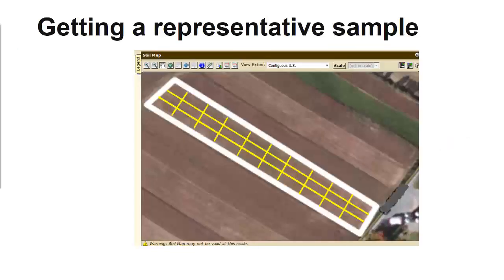One method of sampling is the grid method. Using flags or geological features, you can break a field into grids and take a sample within each cell. The number of cells within each field will depend on how intense you want to sample, but we recommend a minimum of 15 to 20 subsamples.